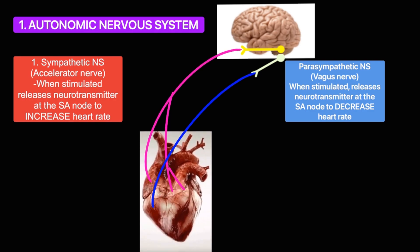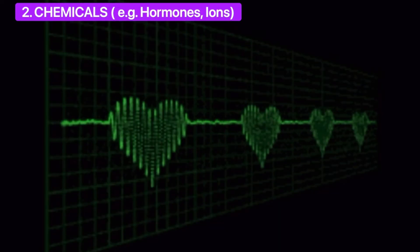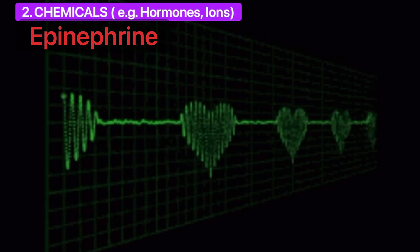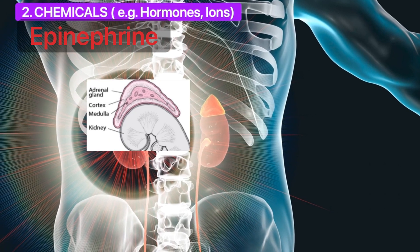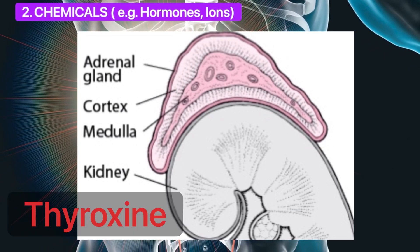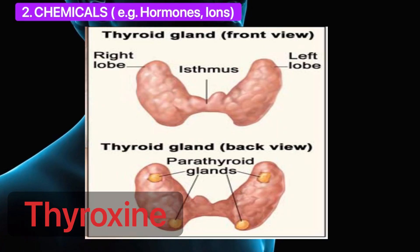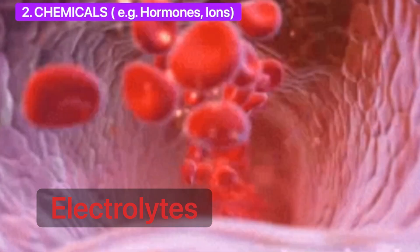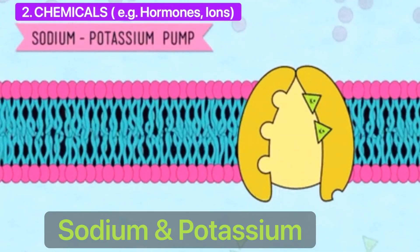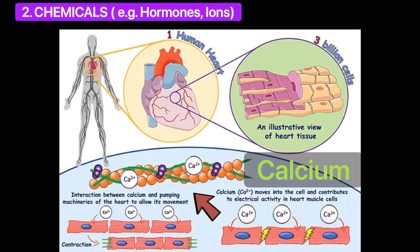Second, chemicals such as hormones and ions can influence heart rate. Examples of these are epinephrine secreted by the adrenal medulla and thyroxine secreted by the thyroid gland — they can increase heart rate. Also, abnormal blood concentration of electrolytes such as sodium, potassium, and calcium interfere with muscle contraction.